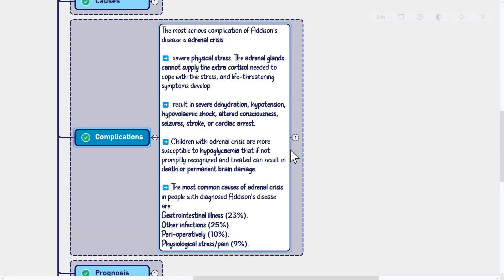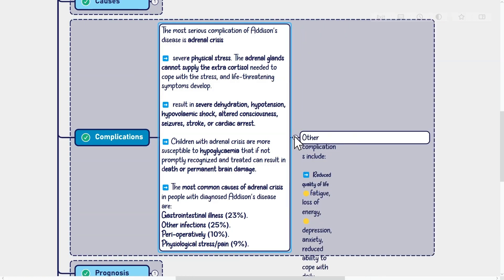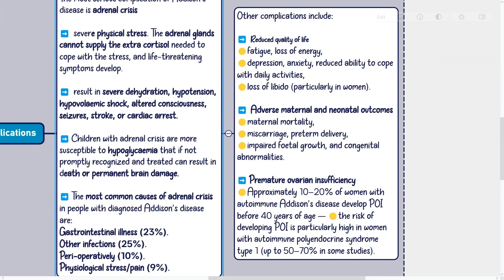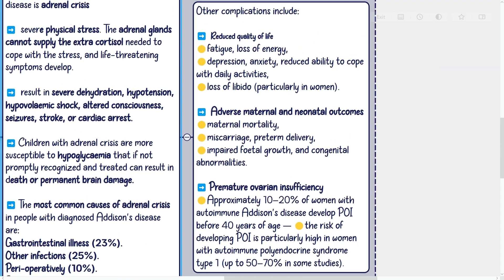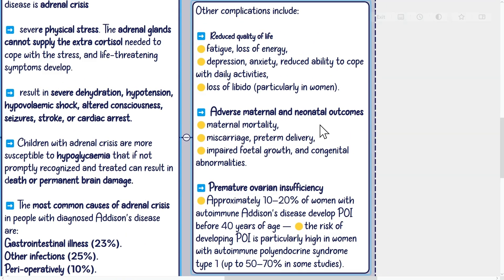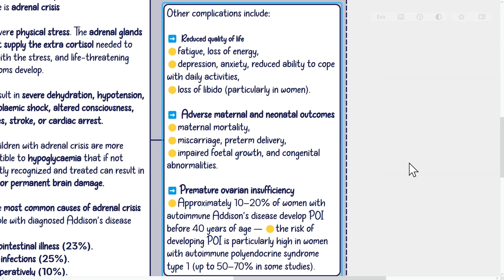The most common causes of adrenal crisis in people with diagnosed Addison's disease are gastrointestinal illness (23%), other infections (25%), perioperatively (10%), and physiological stress or pain (9%). Other complications include reduced quality of life. Factors affecting quality of life include fatigue, loss of energy, depression, anxiety, reduced ability to cope with daily activities, and loss of libido, particularly in women.